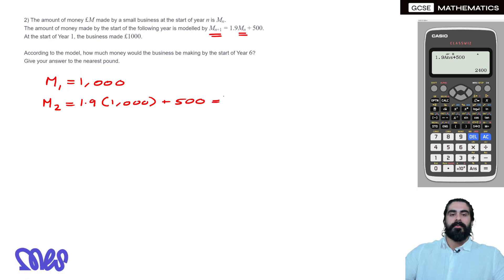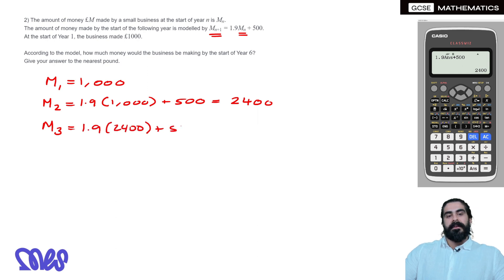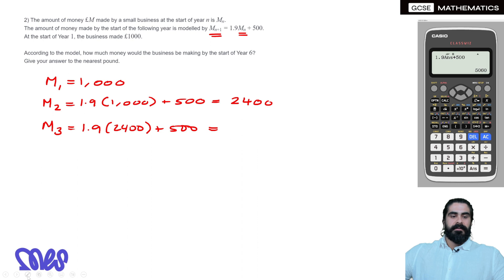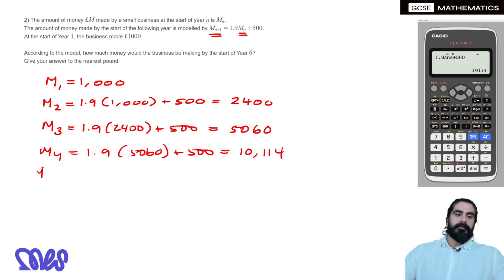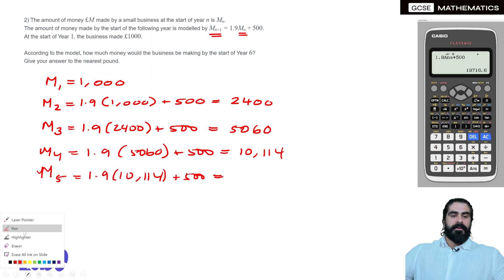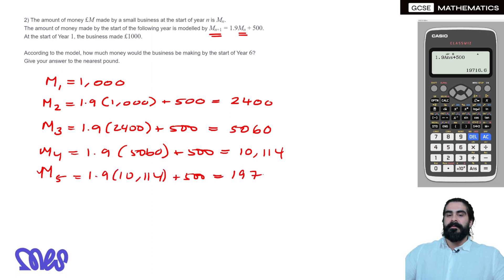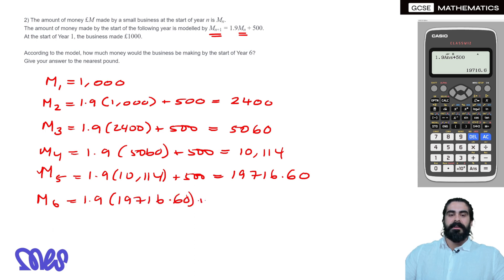So 1.9 times 1000 plus 500 is 2400. The third term is 1.9 times 2400 plus 500 — because the answer is now 2400, we just press equals. So we get 5060. For the start of the fourth year we're doing 1.9 times 5060 plus 500, giving 10114. M5 by similar argument — remembering we're talking about money — is 19716.60.